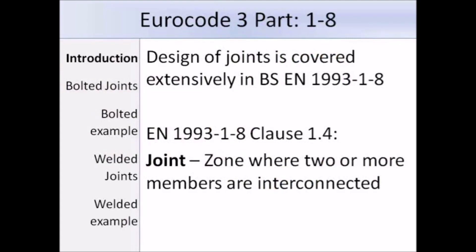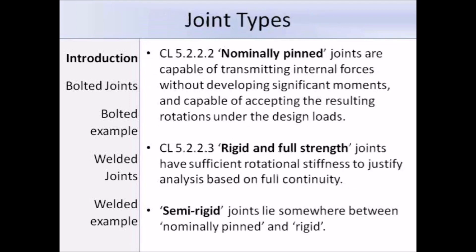In the Eurocodes we will need to refer to EN 1993 Part 1-8, which covers the design of joints. A joint is defined in Clause 1.4 as a zone where two or more members are interconnected. EN 1993 Part 1-8 is extremely long compared to other sections of Eurocode 3, so this presentation will only touch upon some of the key points. There are three types of joints that we can have, defined by the various clauses in the Eurocode.